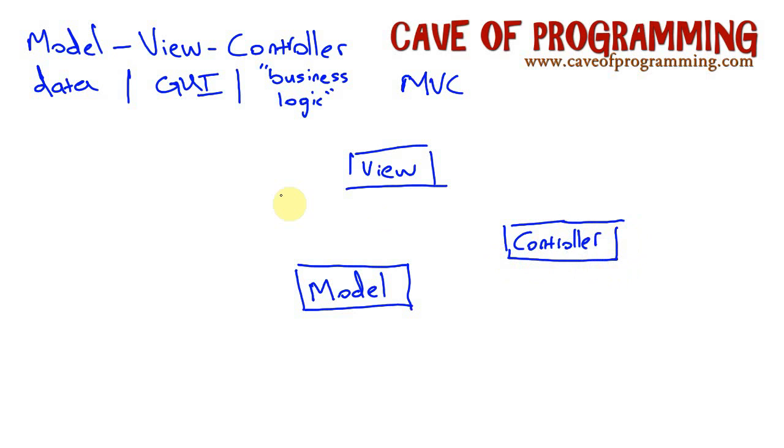Now the view's job is to represent stuff that's in the model. So the view is going to make requests for data from the model. This arrow is data. And there are two possibilities here. Certainly the view is almost certainly going to make requests to the model. It's going to say to the model, give me this bit of data or give me that bit of data, and it's going to represent that data somehow to the user. So it's going to make requests.